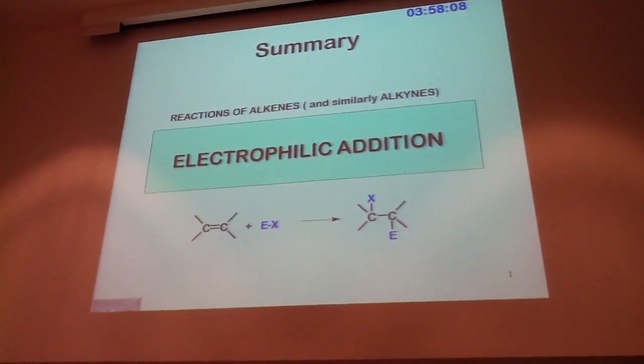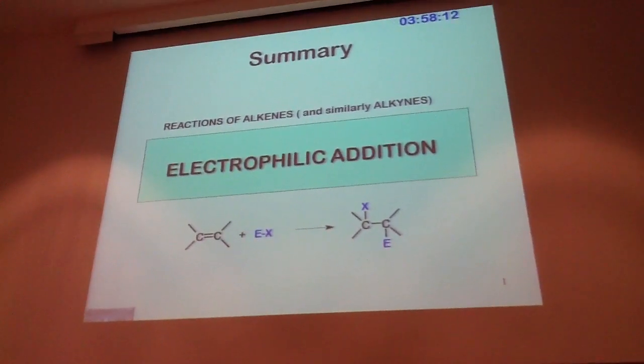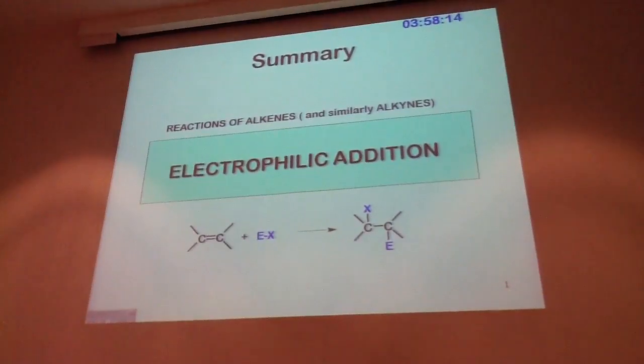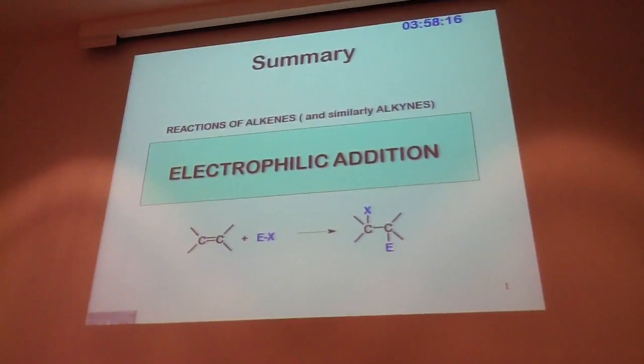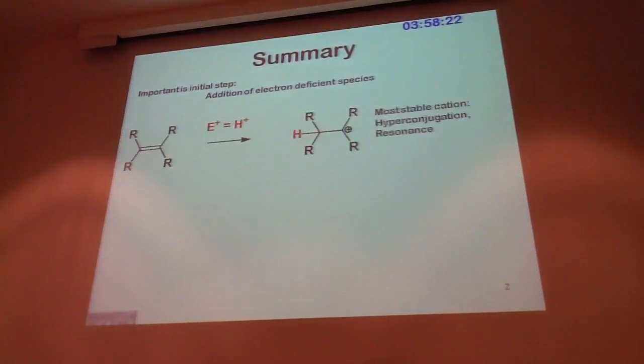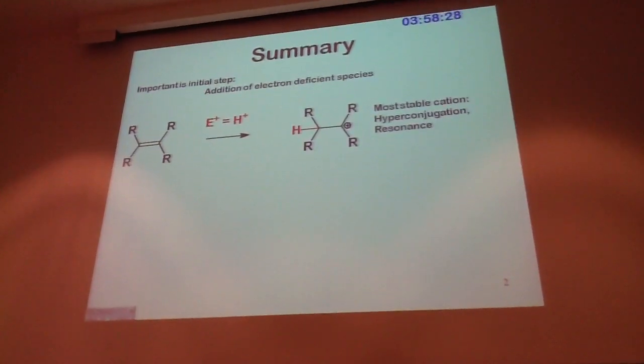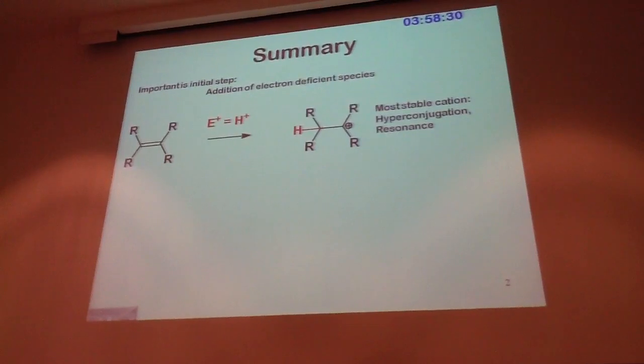There's always an electrophile that initially attacks your pi system. This can be of a different nature. In the case of acid-catalyzed hydration, your electrophile is a proton. What you want to generate is a stable carbocation.